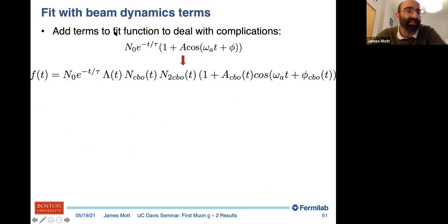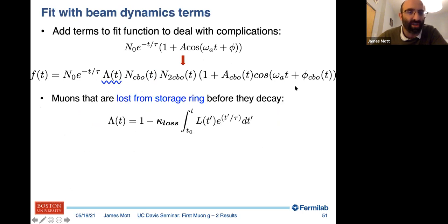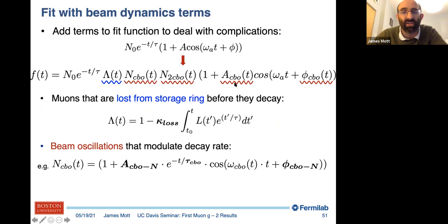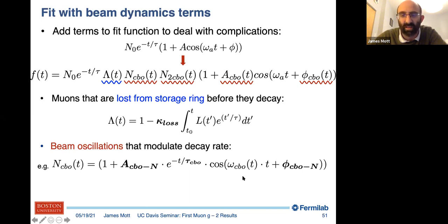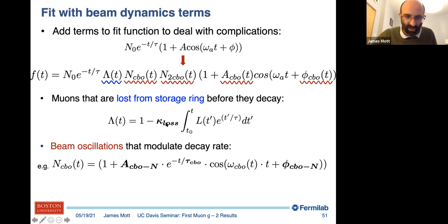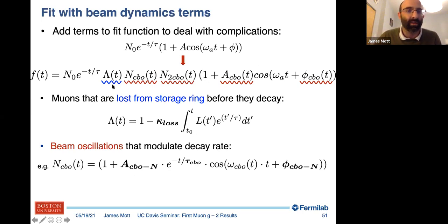We correct for both issues by adding terms to our fit function. We add a term for lost muons — we measure the loss rate with the calorimeters, with one scale factor parameter — and we add terms for the betatron oscillations. Each oscillation term has an amplitude, a lifetime, a frequency, and a phase — four parameters. So when we say it's a 22-parameter fit, it's just because each additional oscillation effect adds four parameters. We end up with just a few effects but quite a lot of parameters quickly.